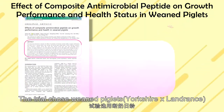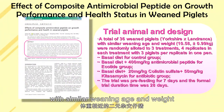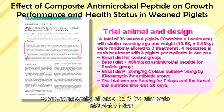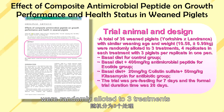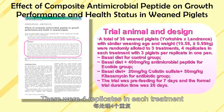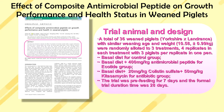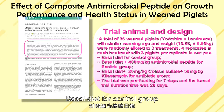The trial chose weaned piglets with similar weaning age and weight, which were randomly allotted to three treatments. There were four replicates in each treatment, with a basal diet for the control group.